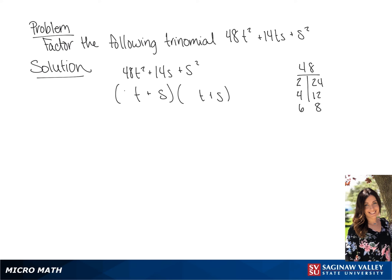Now we have 6 and 8. We see when those are added together, they equal 14. So the solution to our problem is 6t plus s times 8t plus s.